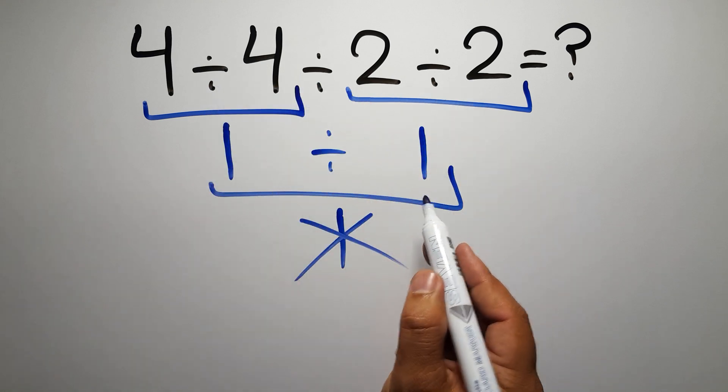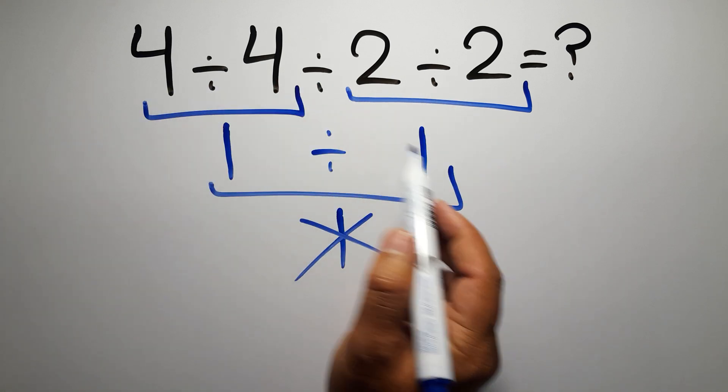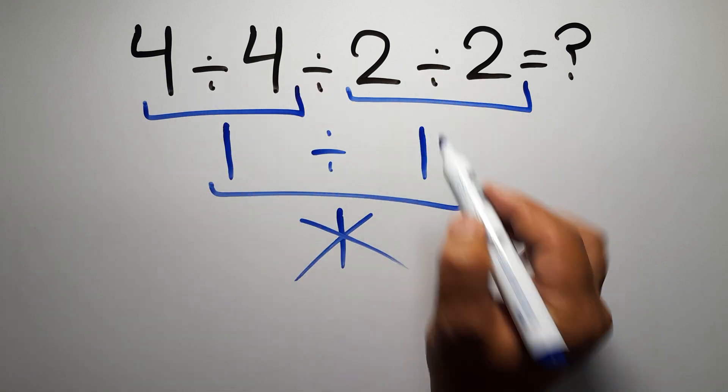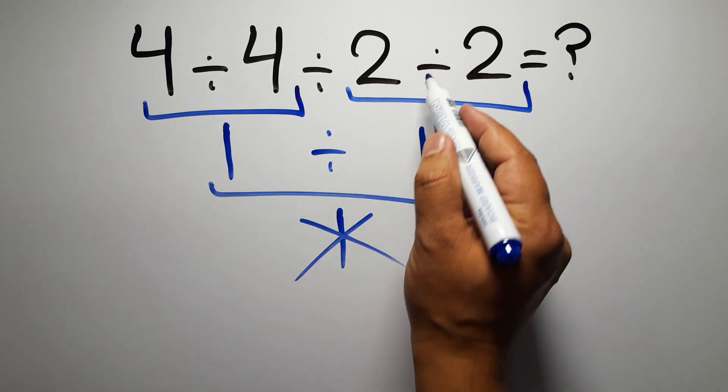So here first we have to do this division, then this division, and finally this division. If we do this division before this division, it is wrong.